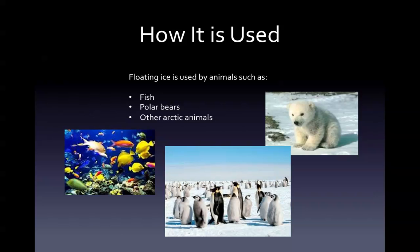How this function is used: in general, animals that survive in the cold usually need ice in order to hunt or to find shelter. Fish use floating ice for insulation. Polar bears and other aquatic creatures use ice for shelter and to escape cold waters.